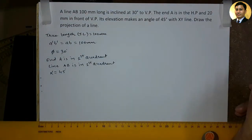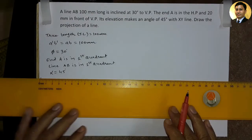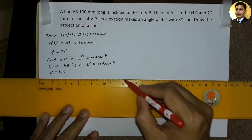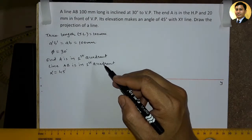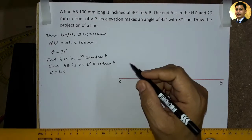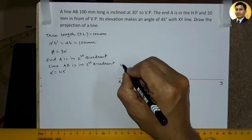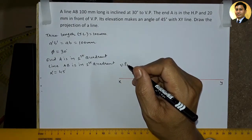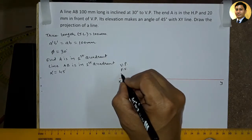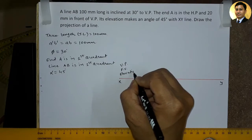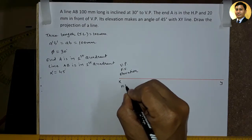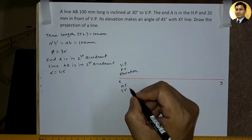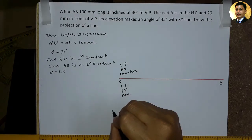So इस problem को draw करने के लिए सबसे पहले हम एक random length की XY line draw करेंगे. यहाँ पर हमने इस line को first quadrant में consider किया है. इसलिए XY line से उपर का जो plane बनेगा वो होगा vertical plane और vertical plane पर हम हमेशा front view, जिसे हम elevation भी बोलते हैं, वो mark करेंगे. XY line के नीचे का जो plane है वो horizontal plane है और horizontal plane पर हम हमेशा top view, जिसे हम plan भी बोलते हैं, वो mark करेंगे.